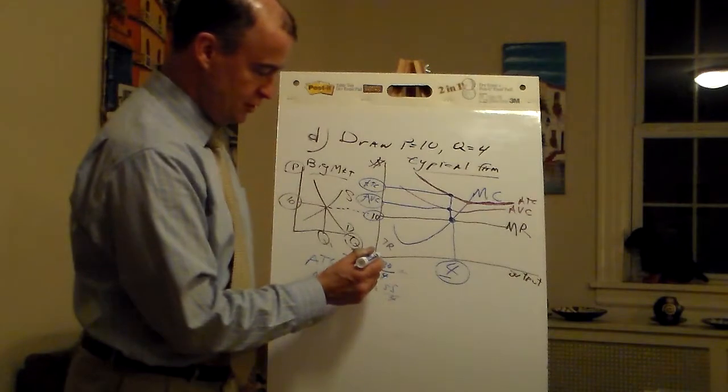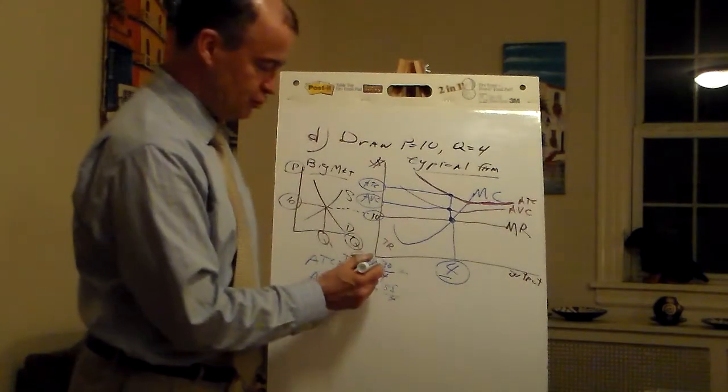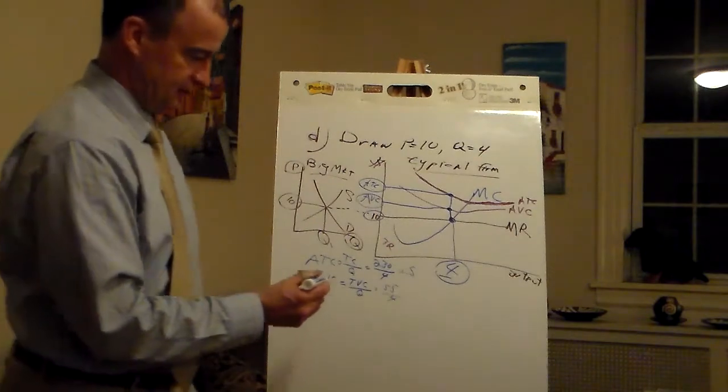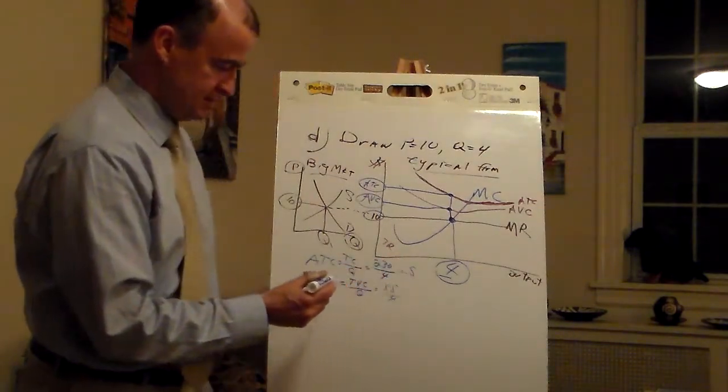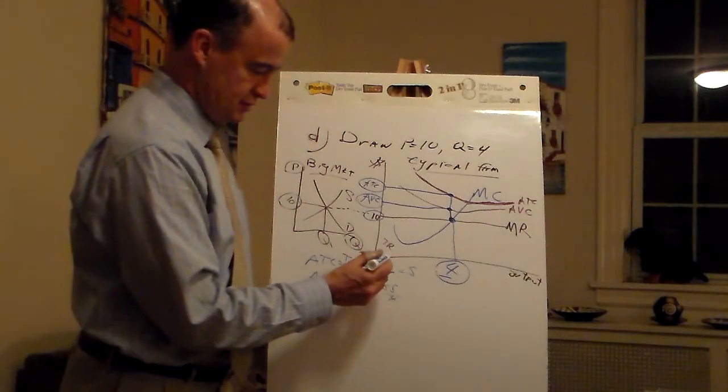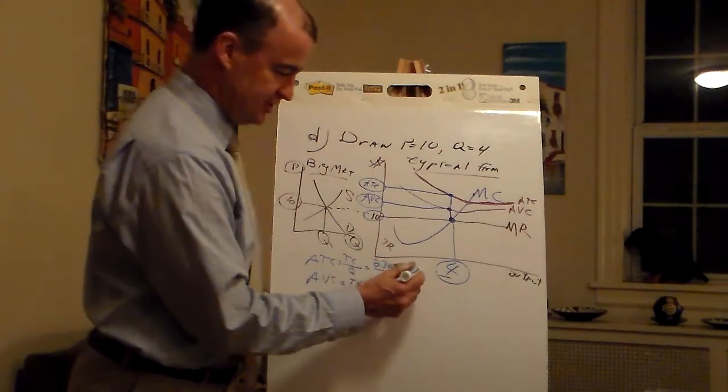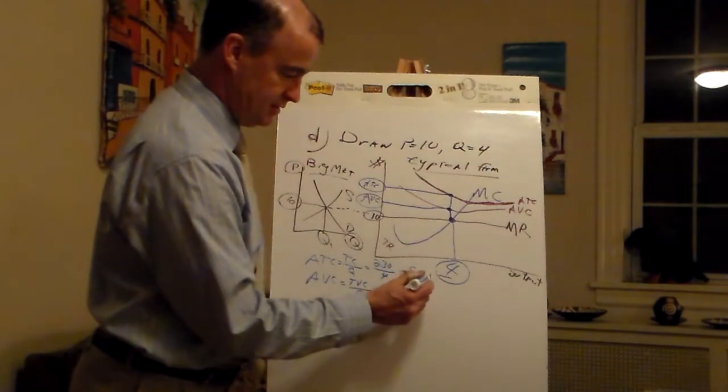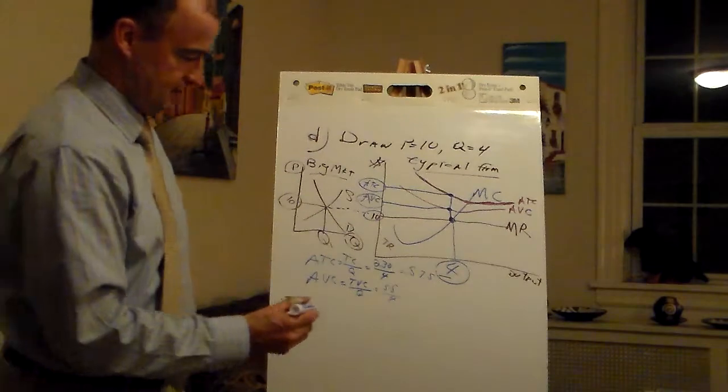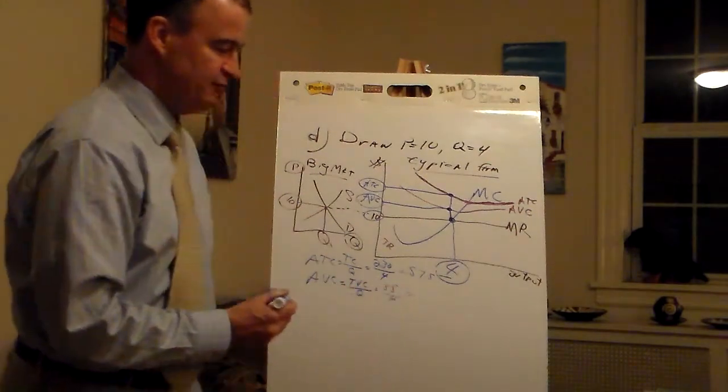4 into 230. 4 into 20 goes 5. Carry 3. 4 into 30. 4 into 30 goes 7.5.